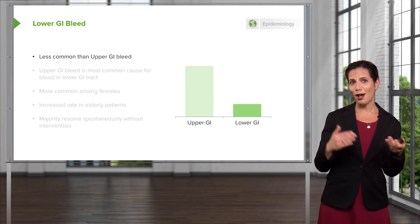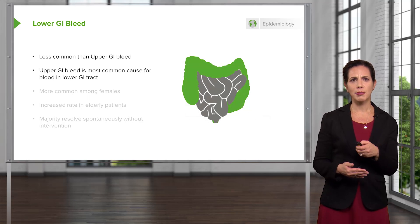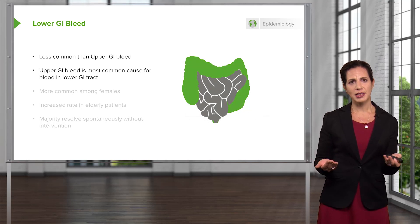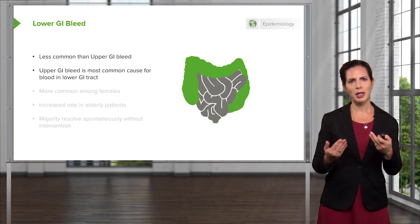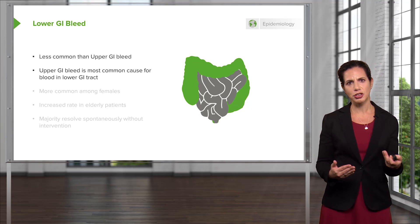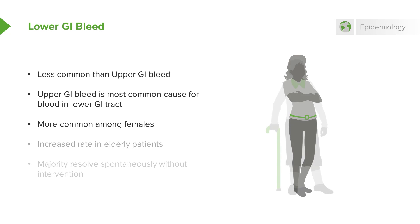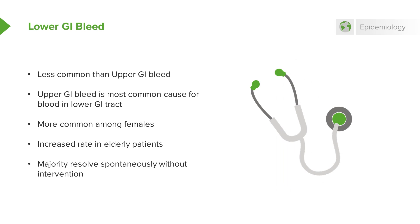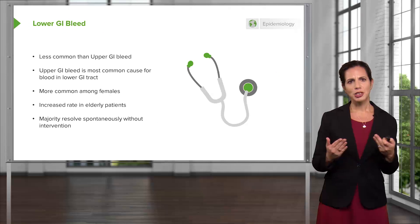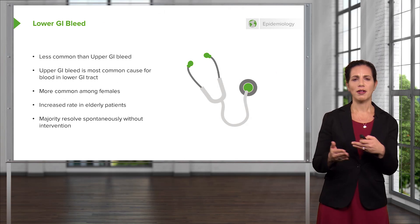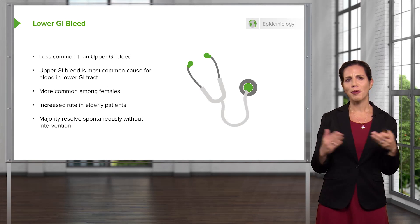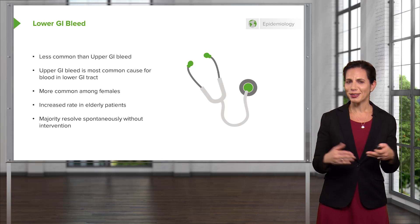Lower GI bleed is less common than upper GI bleed, and upper GI bleed is actually the most common cause for blood appearing in the lower GI tract — blood from the stomach trickles down into the small and large intestines. Lower GI bleed is more common among female patients and in elderly patients. Interestingly, a majority of lower GI bleeds actually resolve spontaneously without much intervention, which differs from upper GI bleeds that more likely require an intervention.